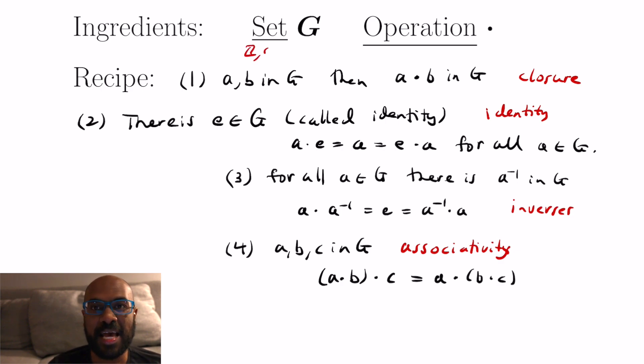So a quick example of groups is the integers, rational numbers, real numbers, or complex numbers, all of them, if you take them separately with their addition. And here the identity will be zero in each case. When you add zero to anything you get that back. And the inverses are the negatives of elements. So if you take an element a and you add negative a you get zero which was the identity element that we mentioned.